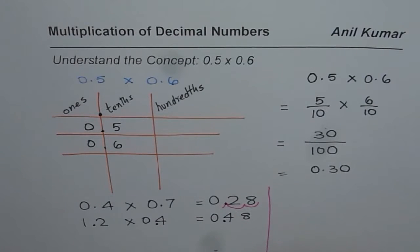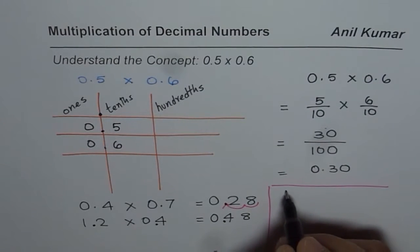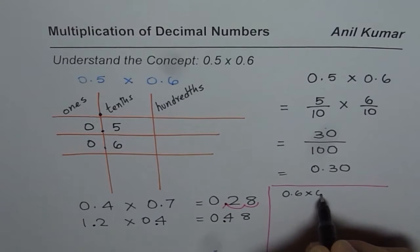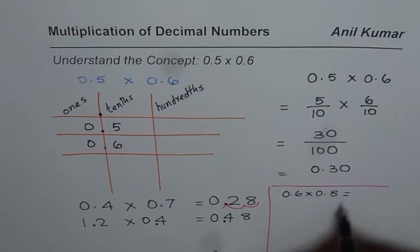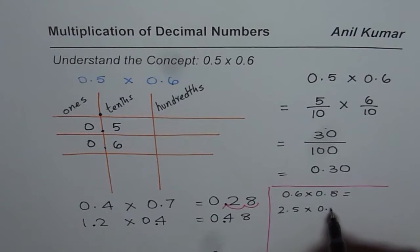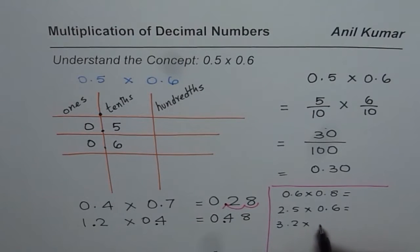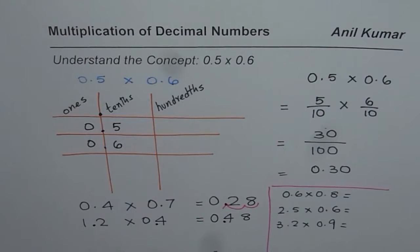Here are practice questions for you. Now you need to multiply these numbers and write down their answer. So I will give you numbers like 0.6 times 0.8. How much is that equal to? Let us say 2.5 times 0.6. How much is that equal to? 3.2 times let us say 0.9. I am giving you one digit numbers on this side so that it is simpler. You can pause the video. Answer the question.